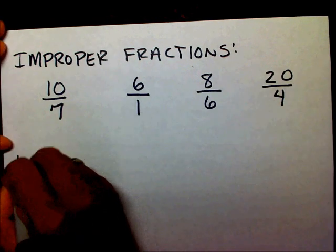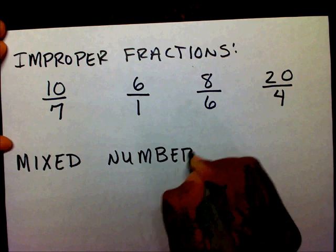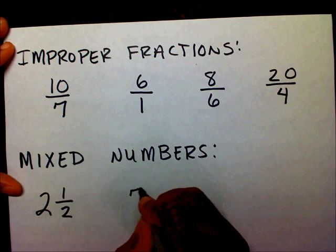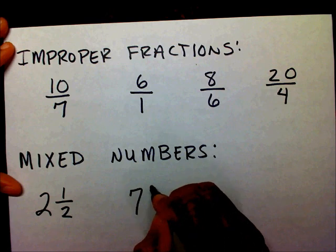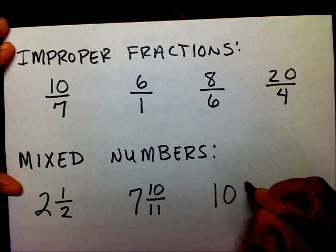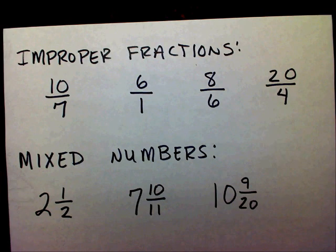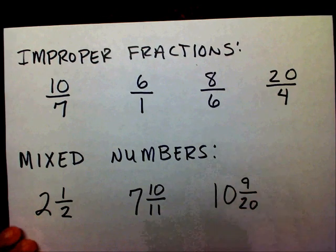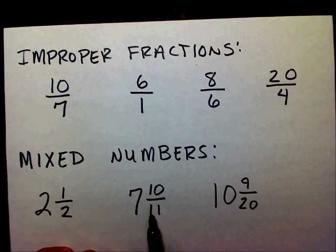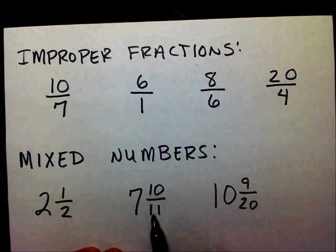And then we have mixed numbers. Mixed numbers look like this. If you notice, mixed numbers consist of a whole number and a fraction. You have a whole number and a fraction. But if you notice in this one, you have a whole number with an improper fraction.